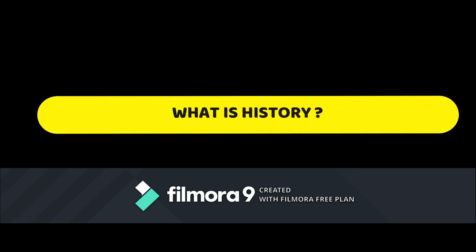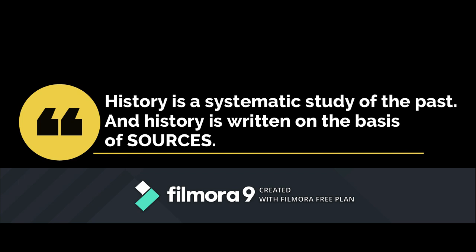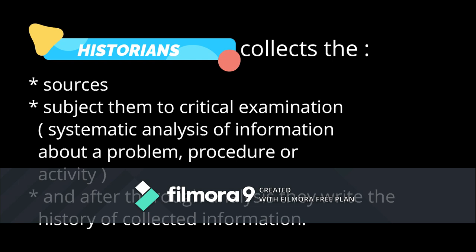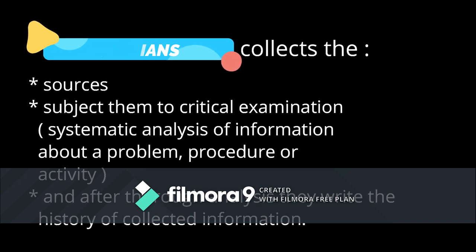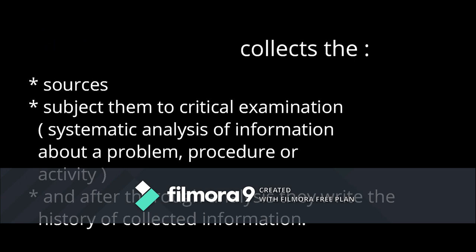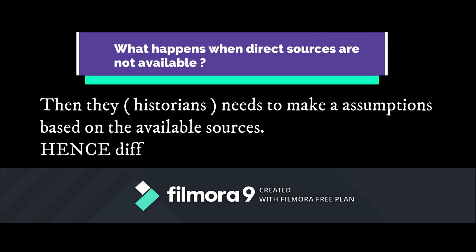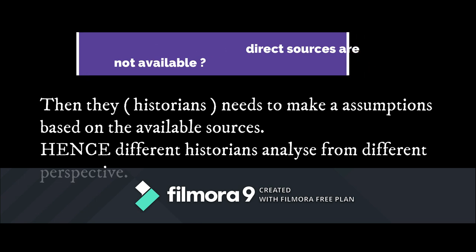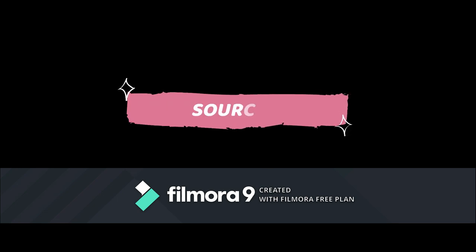Before starting about the sources, let us understand what history is. History is a systematic study of the past, and it is written on the basis of sources — hence no source means no history. Historians collect sources and subject them to critical examination, that is systematic analysis of information about a problem, procedure, or activity. When direct sources are not available, historians need to make assumptions based on available sources, and different historians analyze from different perspectives.